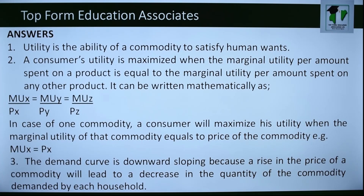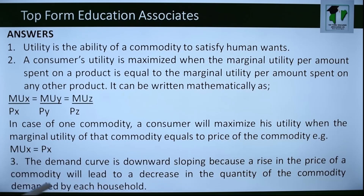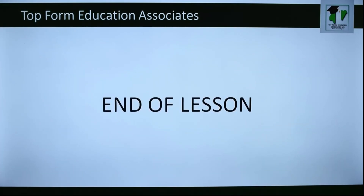The demand curve is downward sloping because a rising price of a commodity leads to a decrease in the quantity of that commodity demanded by each household. Thank you, dear students. I hope you enjoyed the lesson. See you next time.